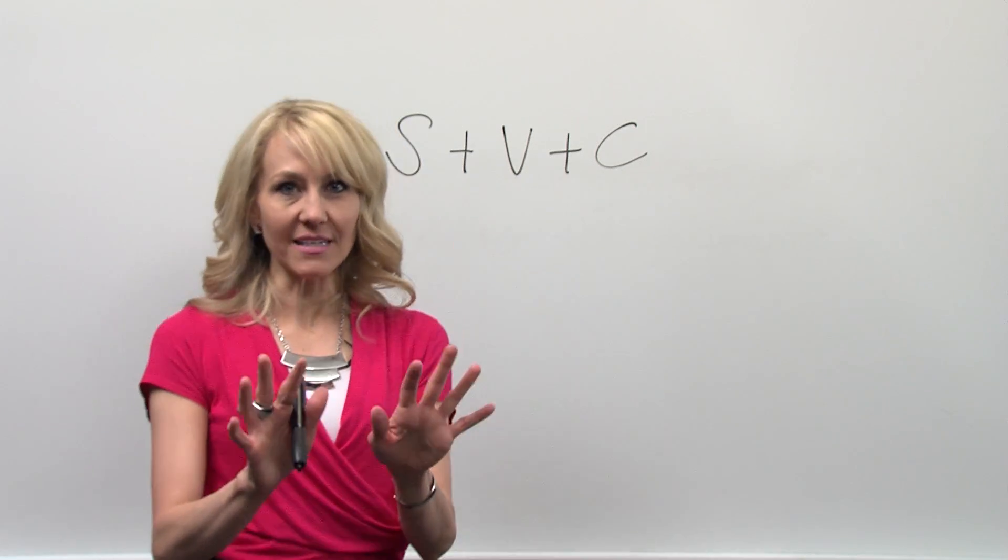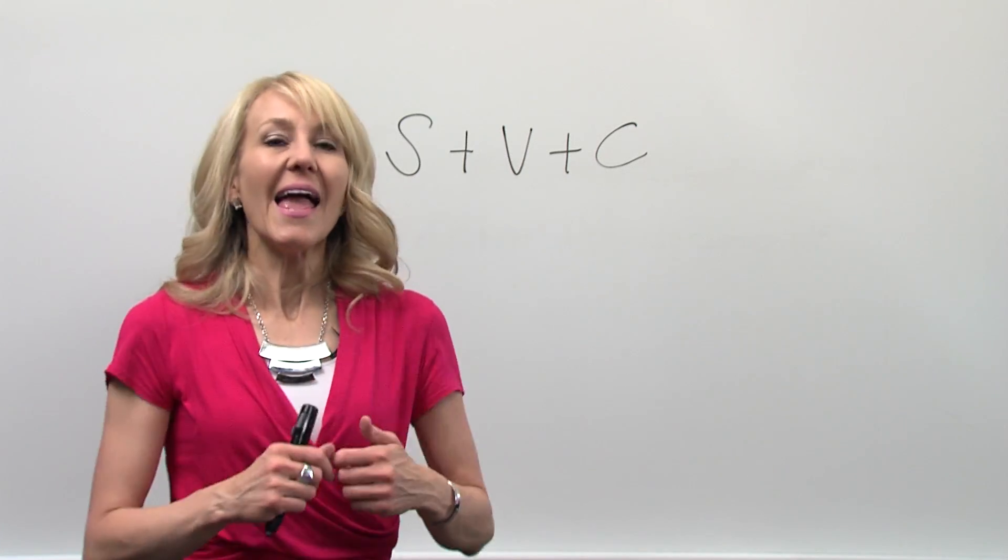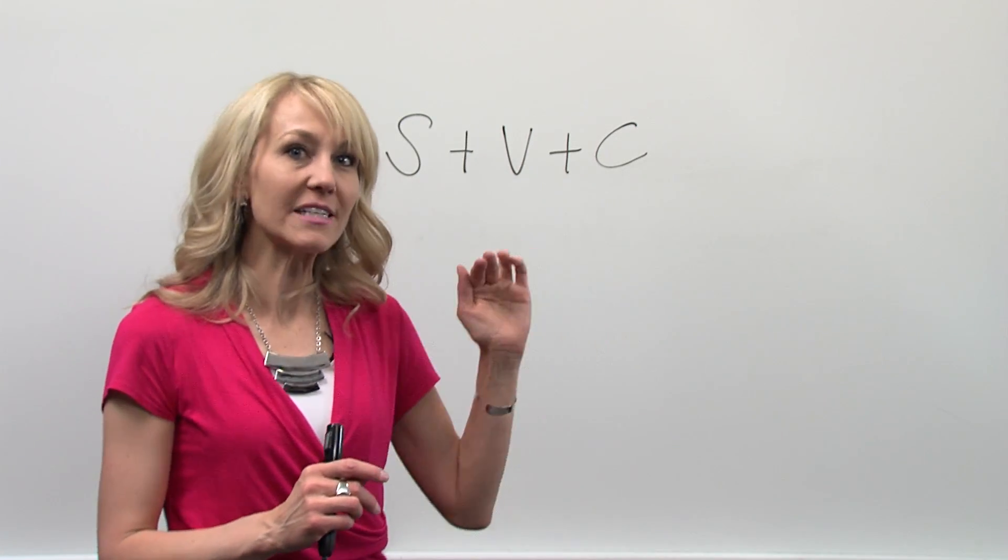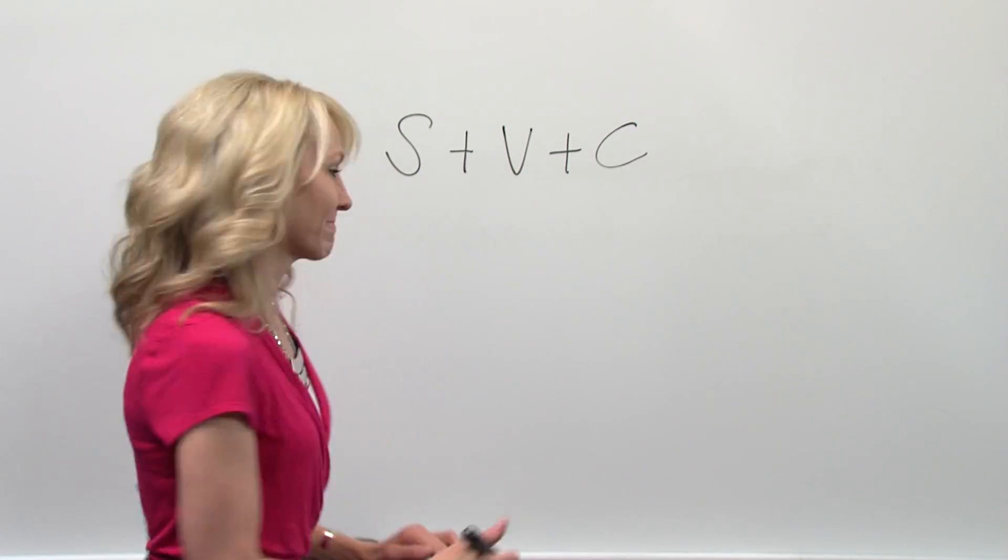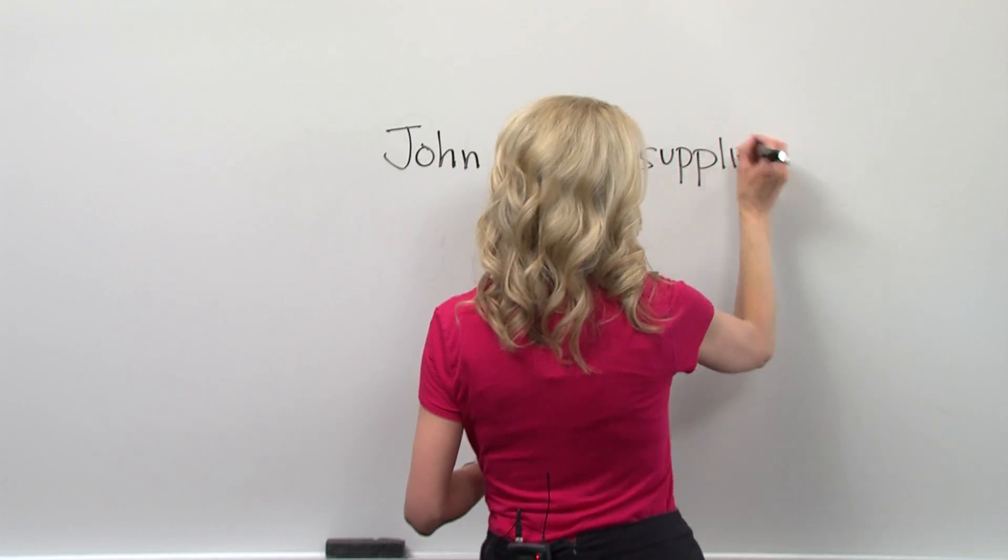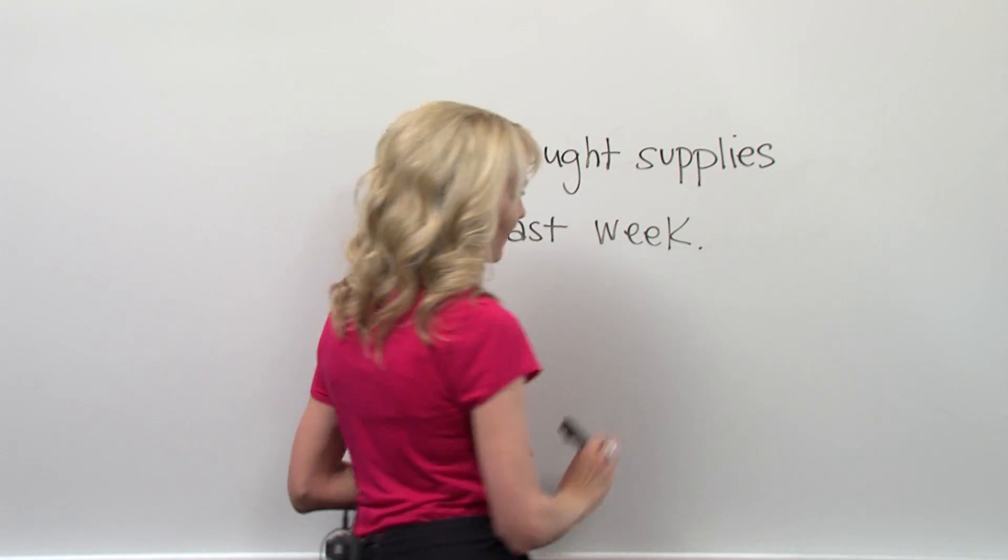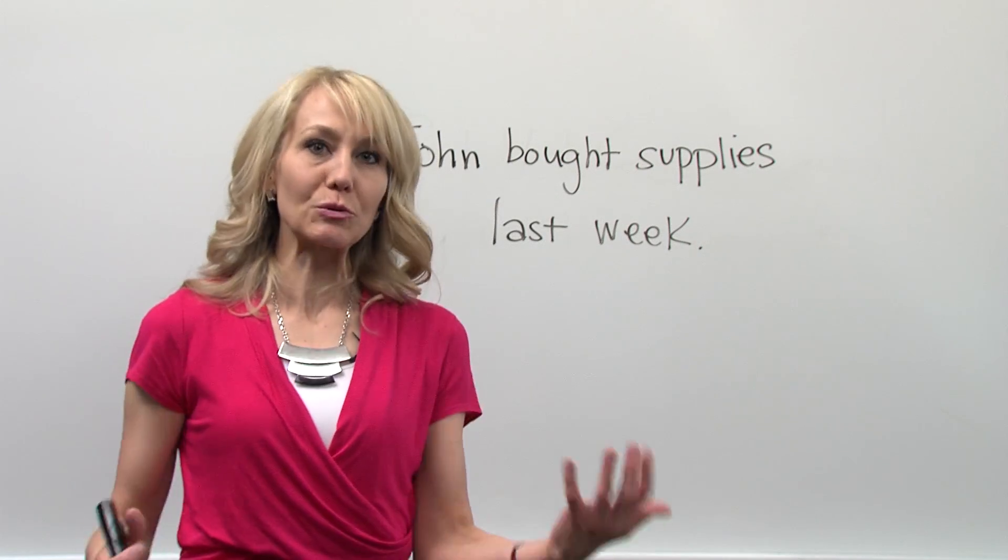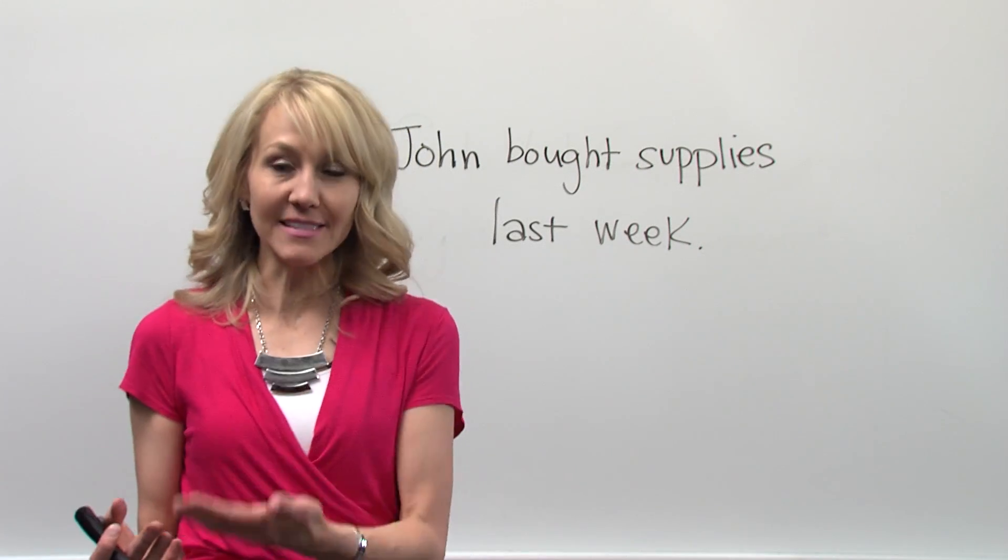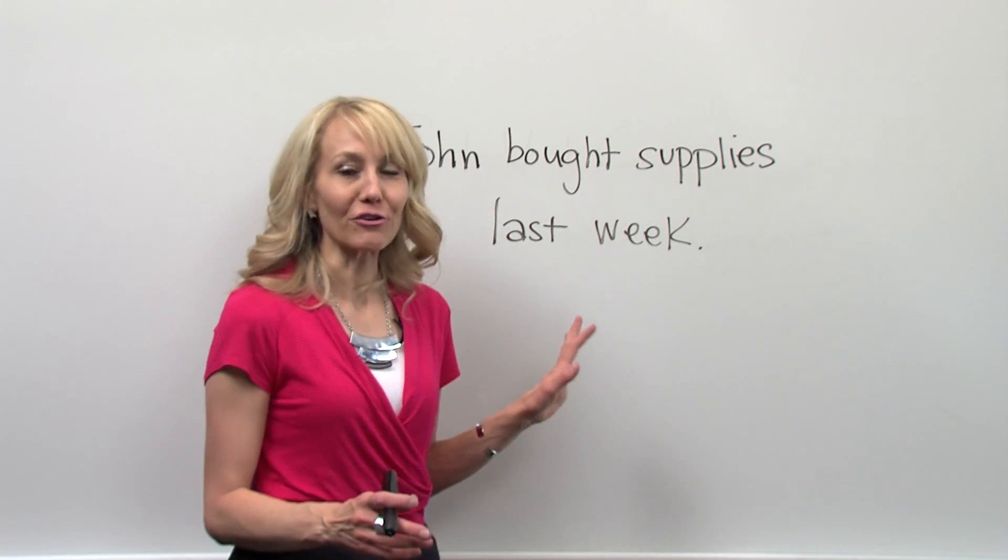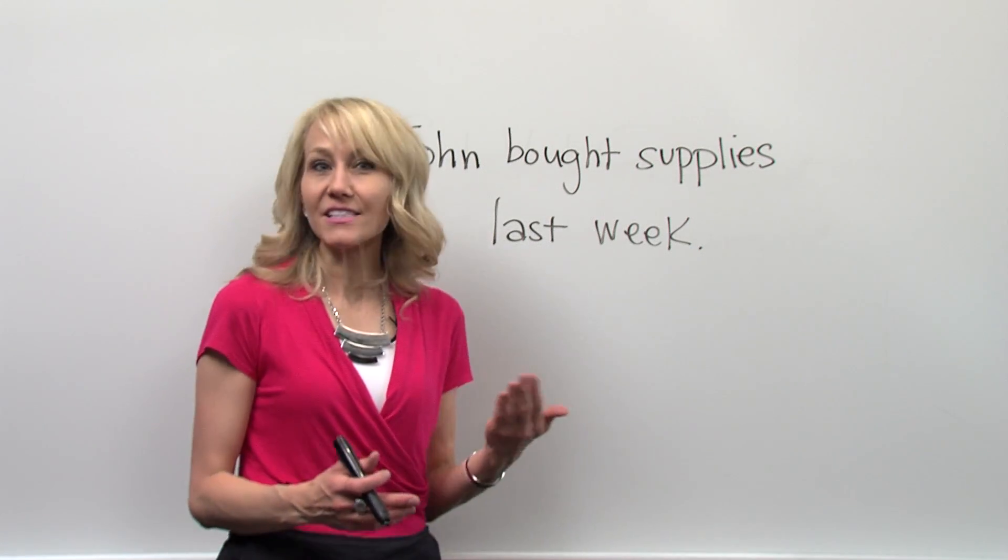Now, when you're looking at a sentence, let me put up a basic sentence and teach you how we first approach identifying the subject, the verb, and the complement. So remember, step one to figuring out these rules and guidelines is to identify the subject, the verb, and the complements.